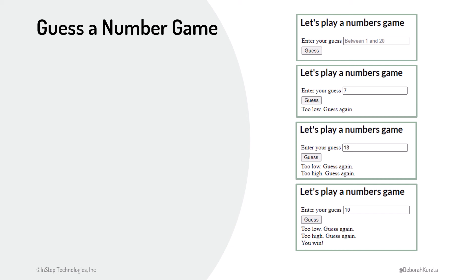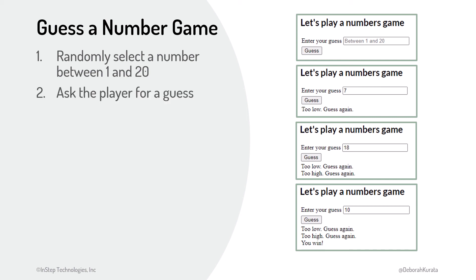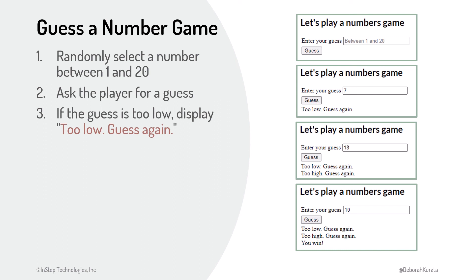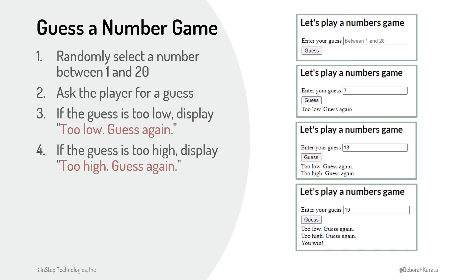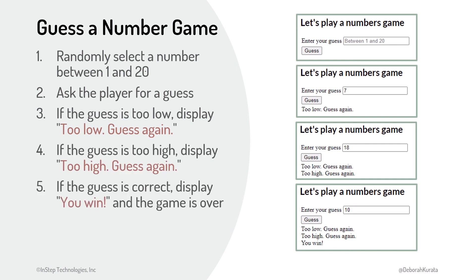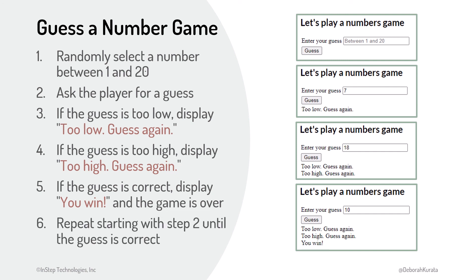Are you ready to see what I came up with? The computer randomly selects a number between 1 and 20. The computer then asks for input — the player's guess. We have three decisions defined with if instructions: what to do if the guess was too low, what to do if the guess was too high, and what to do with a correct answer. A loop allows the player to continue to guess until the guess is correct.